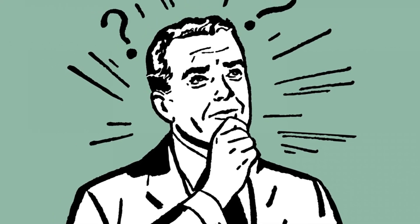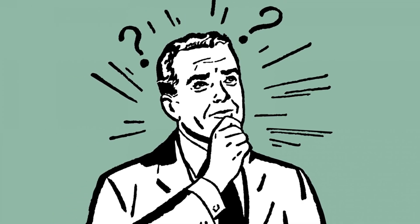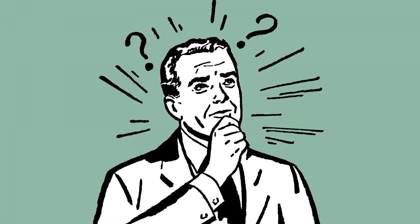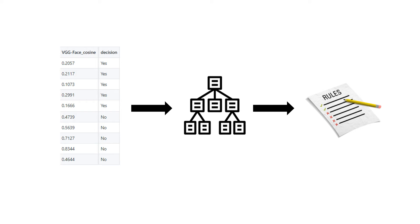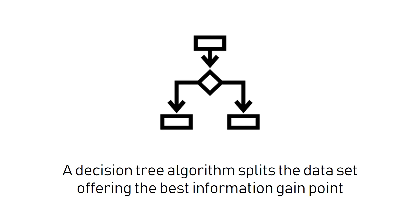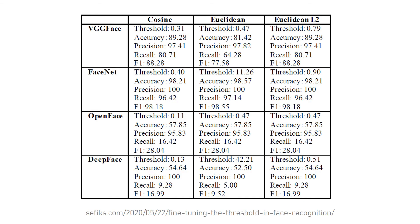Face recognition models represent faces as vectors and then we find the distance between two vectors. But how do we verify two faces are the same or not? If we feed the individual distance values and the target label to a decision tree algorithm, it will find the best split point which maximizes the information gain. Then we can verify two faces if the distance is less than the split point found by the decision tree algorithm. This table shows the best split point for each model-metric combination. For example, we will verify two faces if the distance is less than 0.31 in the VGG Face and cosine pair.